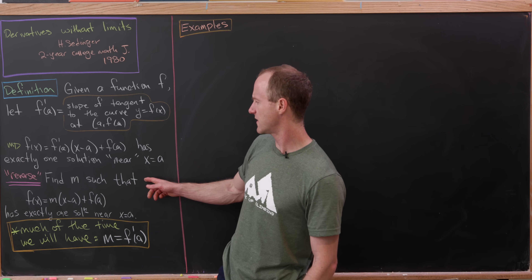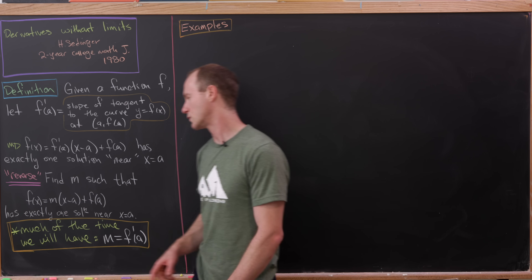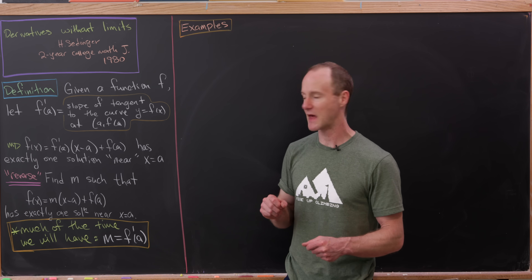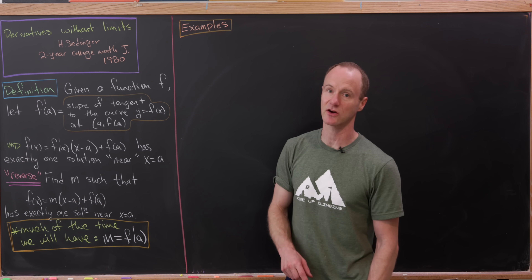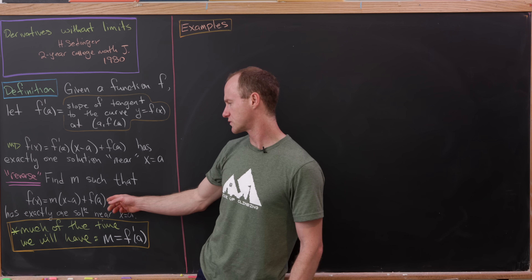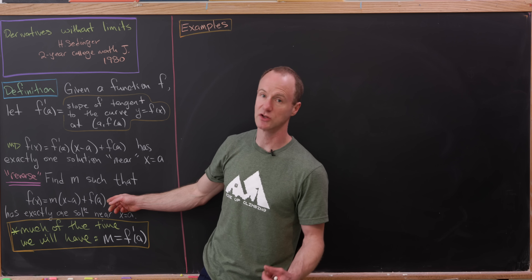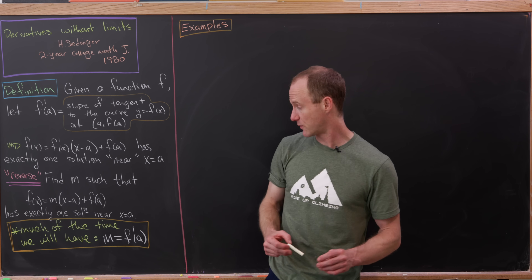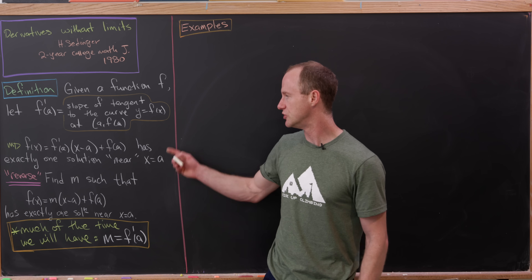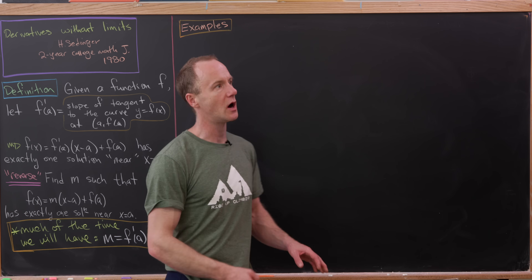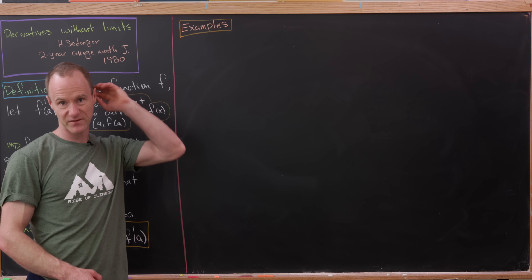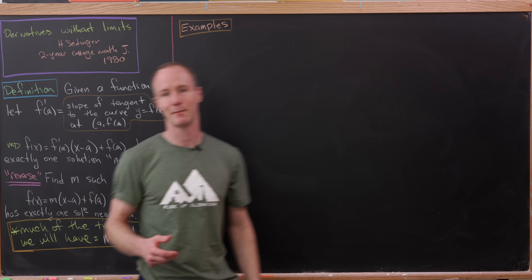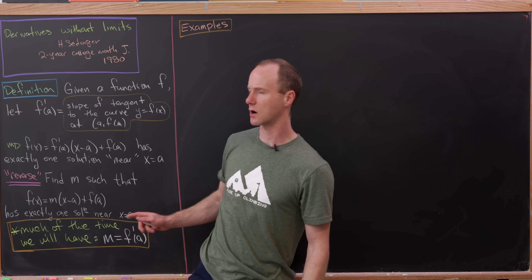If we find some number m so that f of x equals m times x minus a plus f of a has exactly one solution near x equals a, then I'm going to claim that much of the time, this m will necessarily be the derivative. Notice that this is just the equation of a line of slope m through the point a comma f of a. Let's look at some examples where you can actually calculate the derivative using this reversal definition, and then an example where you can't, and finish with a discussion of what conditions on a function make these ideas equivalent.